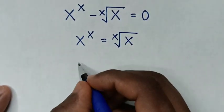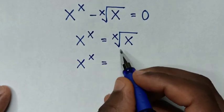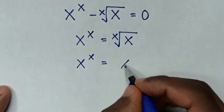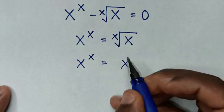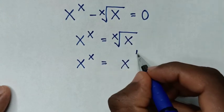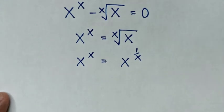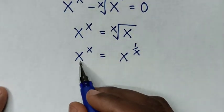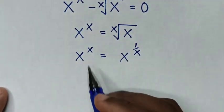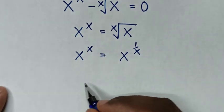In the next step, x power of x is equal to x root of x, which is the same as x power of 1 over x. Now in here we have the same base of x, so we'll compare the powers. Then it will be x is equal to 1 over x.